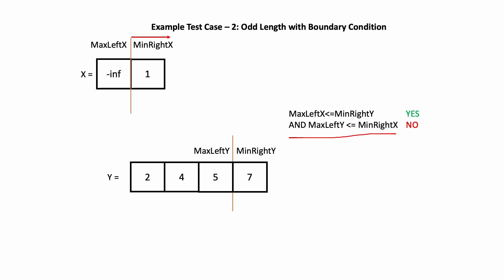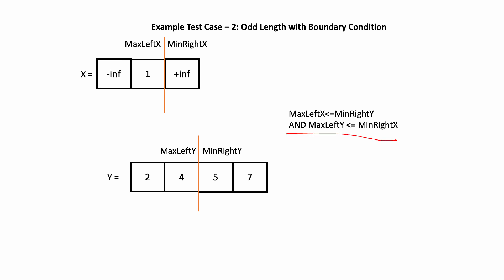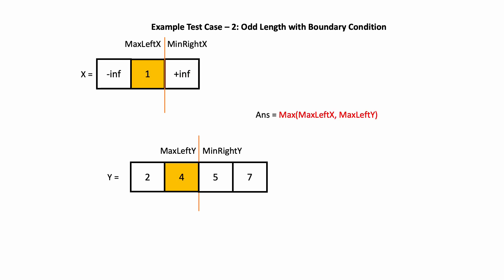The partition of y moves in the opposite direction — to the left. This is the new partition. If you observe, min_right_x is now out of bounds of array x. In this scenario, we consider min_right_x as positive infinity. We check the condition, which is now satisfied, and we have found the elements of interest. When the sum of the lengths of the input arrays is odd, the median is the max of max_left_x and max_left_y, which is 4.